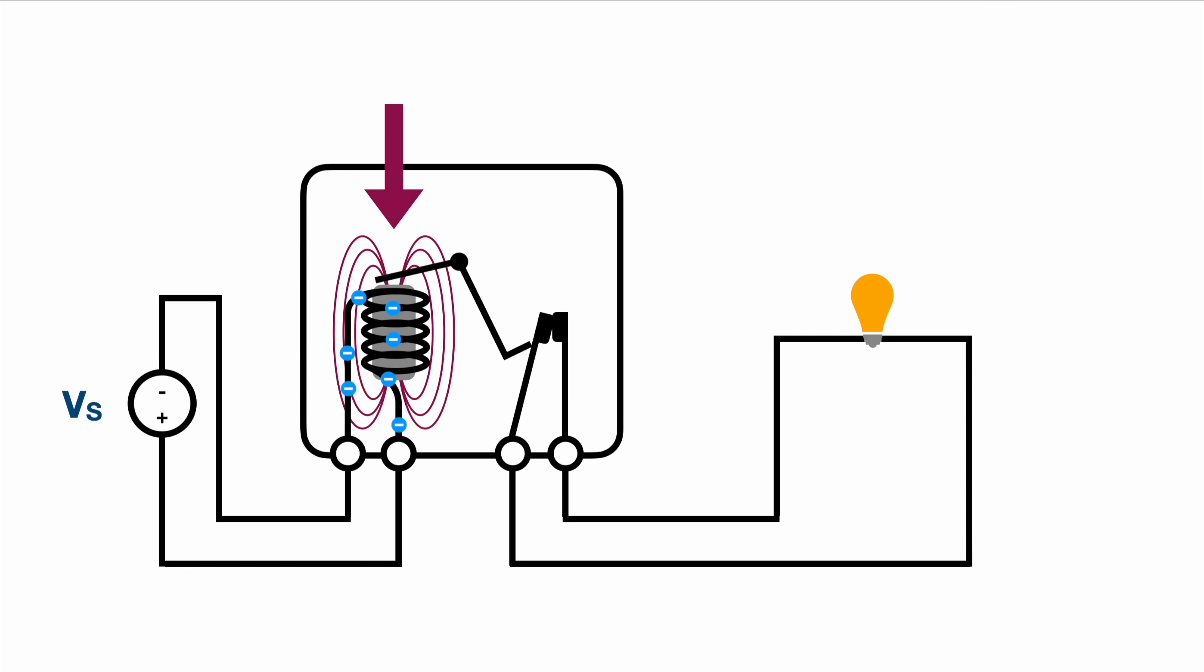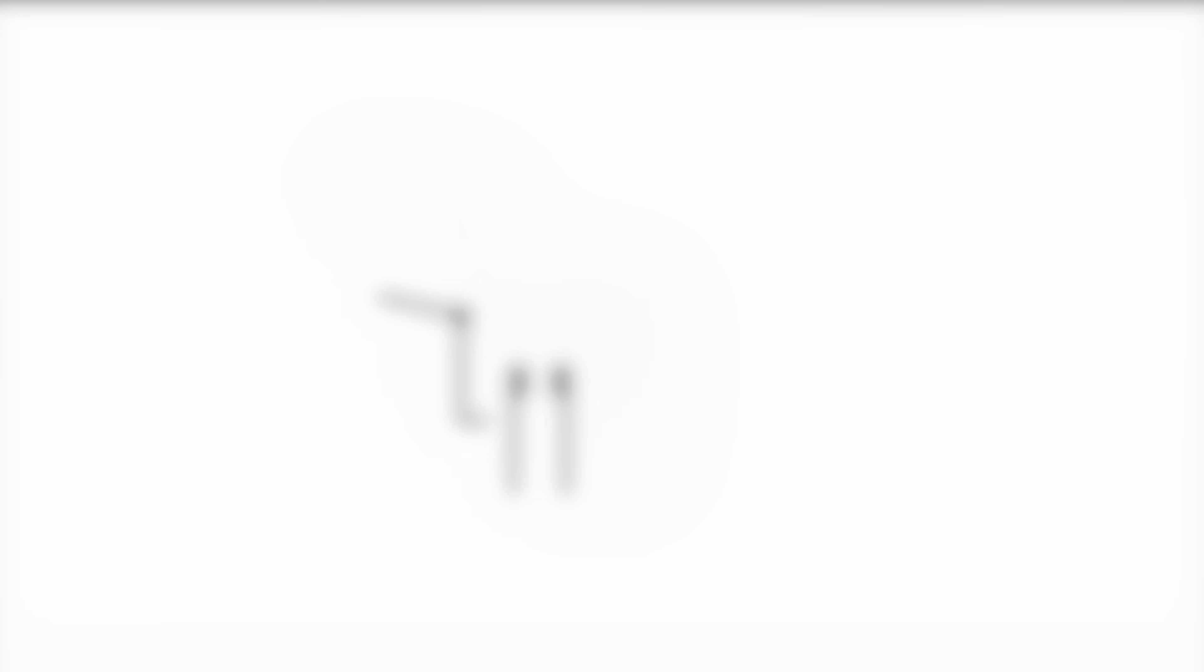To understand why this toggling or jiggling is obviously not good and also why the lifetime of a relay is actually limited we need to take a closer look on what's actually happening on the load circuit. So let's take a closer look on those two contacts here on the right hand side.